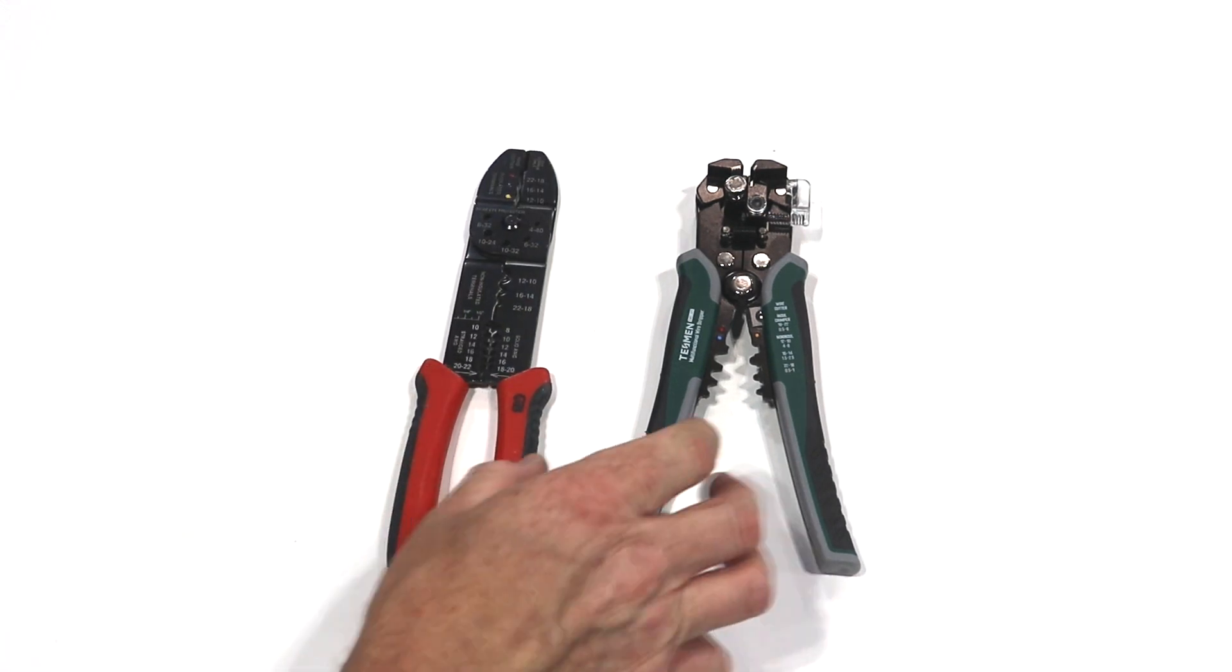These also have the ability to crimp insulated and non-insulated terminals. So essentially what you have is a streamlined version of these. These are nice, but something like this is a little bit more automatic, more ergonomic. Just put the wire in there and squeeze versus something like this where you had to put the wire in and flip these around and actually work at stripping the wire. These absolutely do function the same way though.